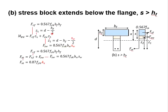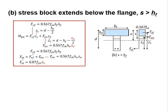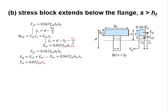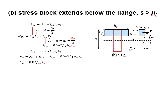Bear in mind that these equations are only valid when the flank is undergoing compression. In the case that the flank is not undergoing compression, the section will be designed as a rectangular beam, because concrete is considered not to offer any tensile resistance.